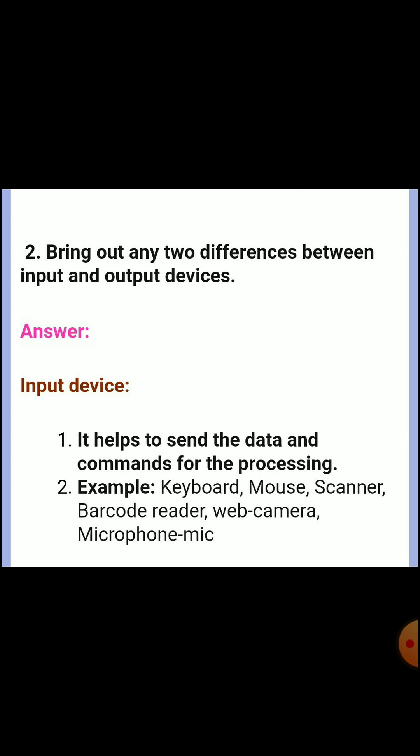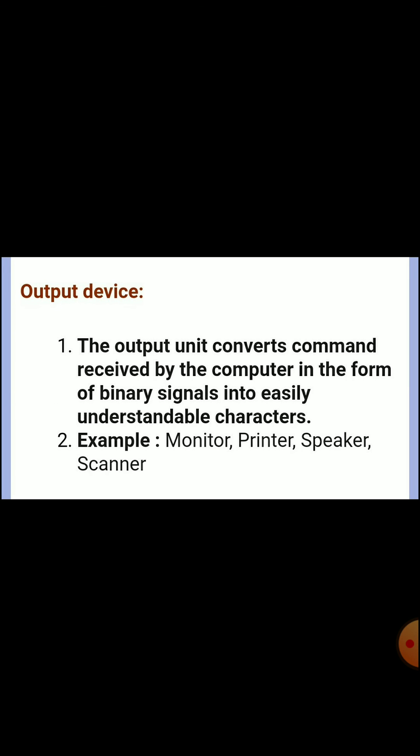Second question: bring out any two differences between input and output devices. Input device — first point: it helps to send the data and commands for processing. Examples: keyboard, mouse, scanner, barcode reader, web camera, microphone. Output device — first point: the output unit converts commands received by the computer in the form of binary signals into easy understandable characters. Examples: monitor, printer, speaker, scanner.